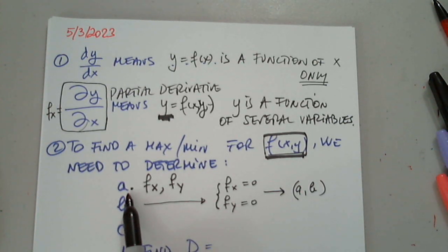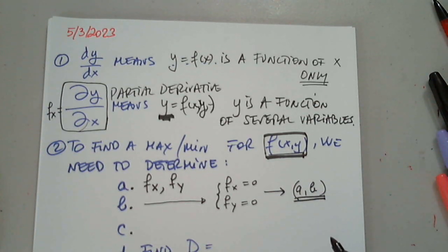So, in step one, or part a, we find fx and fy. In part two, or part b, we set those equal to zero, creating a system to find at least one ordered pair. Perfect. What do we find next?